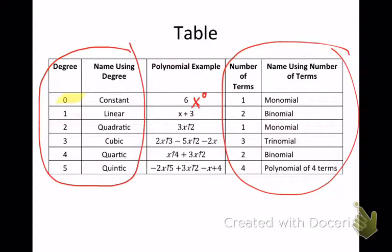What's x to the zero power? One. So it's a constant — I don't have an exponent. So if it's ever just a number, that's what's called a constant degree; it's going to give me a constant number — just a number, no variables. Linear — we've already done linear before, back in chapter one. Linear is when there's an invisible exponent of one, like x to the first plus three, just an x. That's a linear degree.